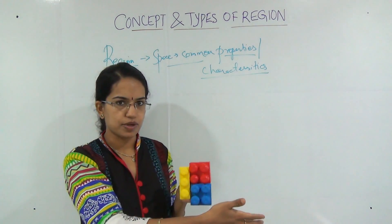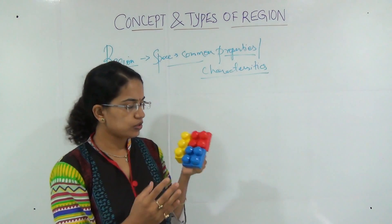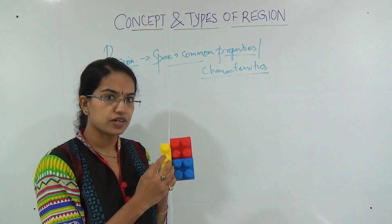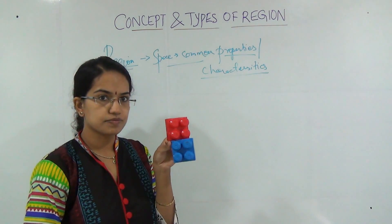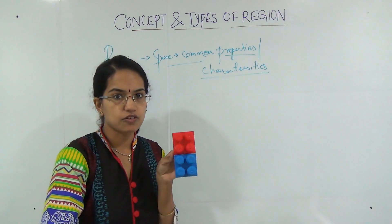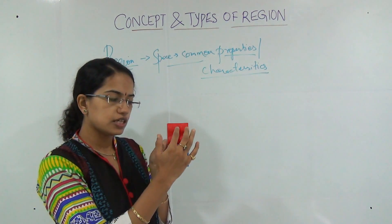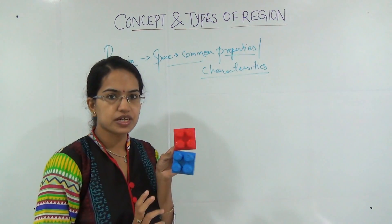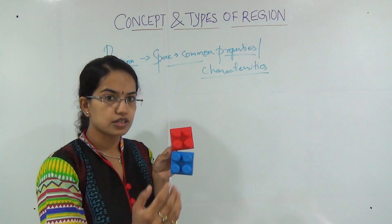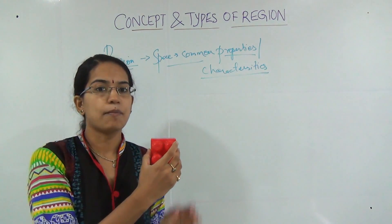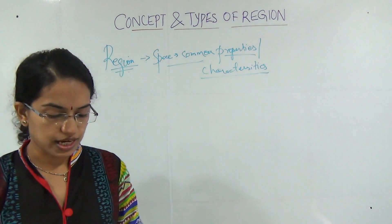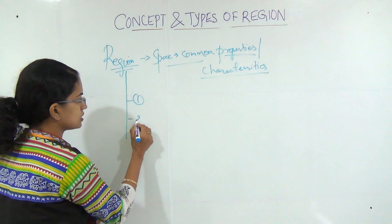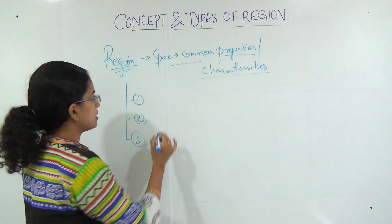But there may be a friend of mine who can say this should not be a region because there are different sizes — these two are of the same size, this is a different size. So according to them, only those two should be the region. Then there can be another friend who says these two appear to be the same size so they should be part of one region, but they have different colors, so they should be demarcated differently. This is where we try to understand the types of region. We will start with the first fundamental classification: formal, functional, and perceptual region.